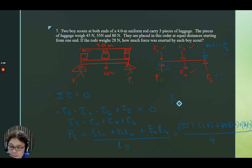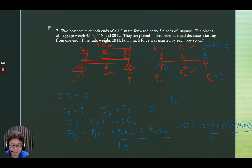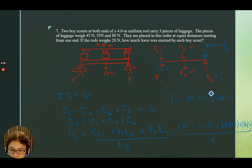Let us find F5. F5 times 4 gives us 121.5, approximately 120 newtons. That's going to be F5.